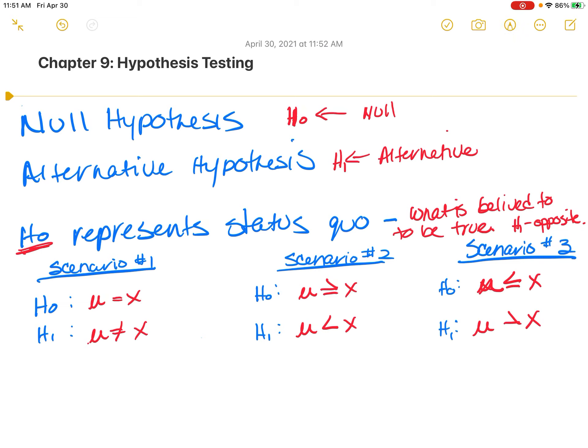And if we were to draw these in pictures, this will be a two-tail test. This is a one-tail test. And if this was the mean, that's the mean. These are not drawn to scale. And then if this is X, we'd be looking at the mean being greater than X. And then this is also a one-tail test.